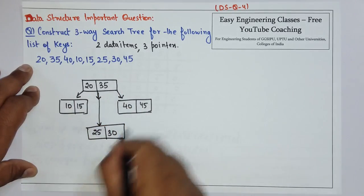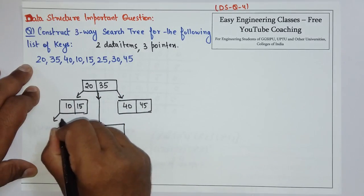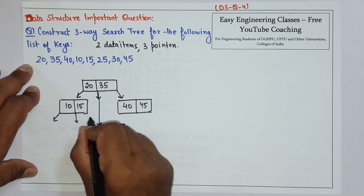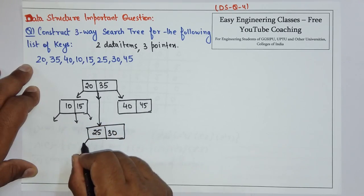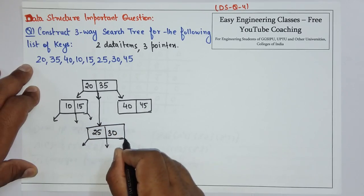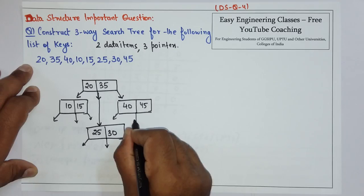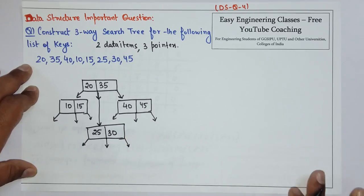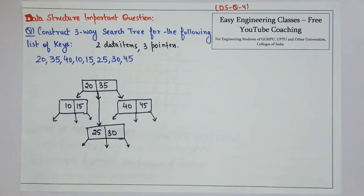So this is the complete three-way search tree where each node has two data elements and three pointers. Thank you for watching the video. Please subscribe to my YouTube channel for more such numerical questions and other tutorials.